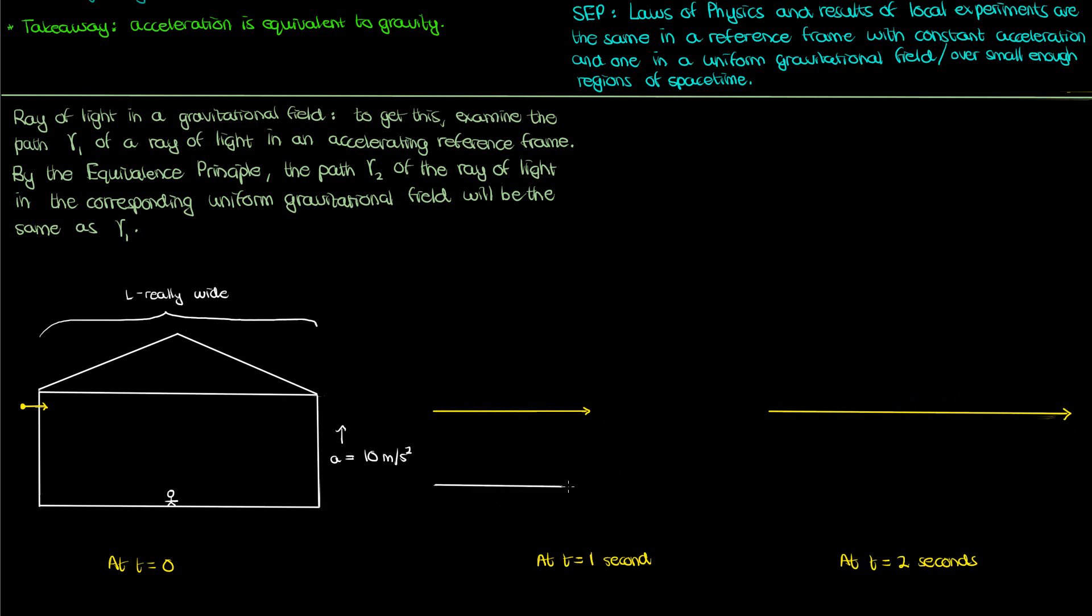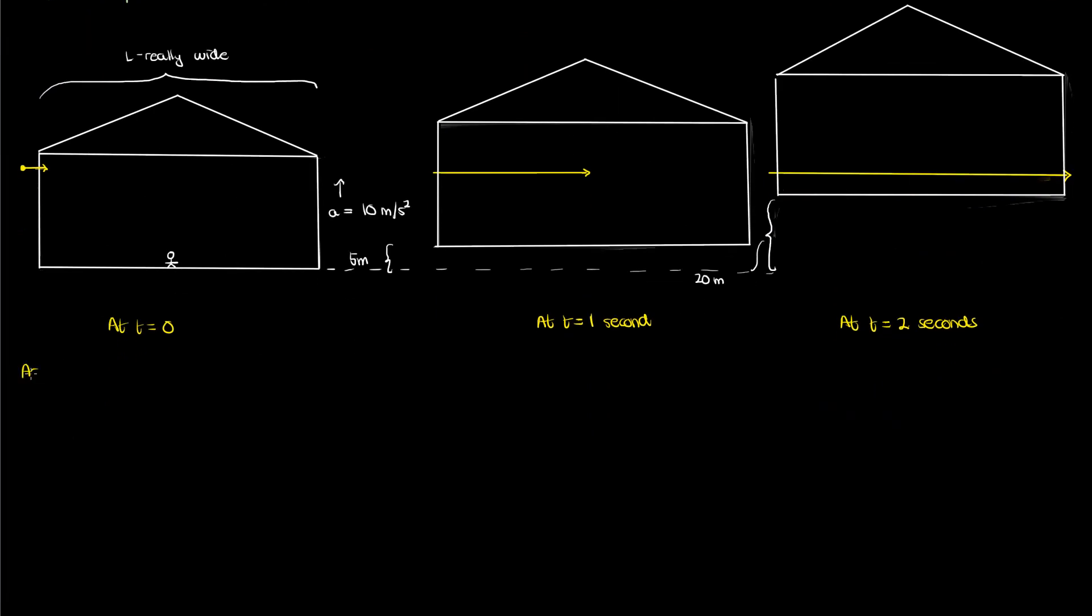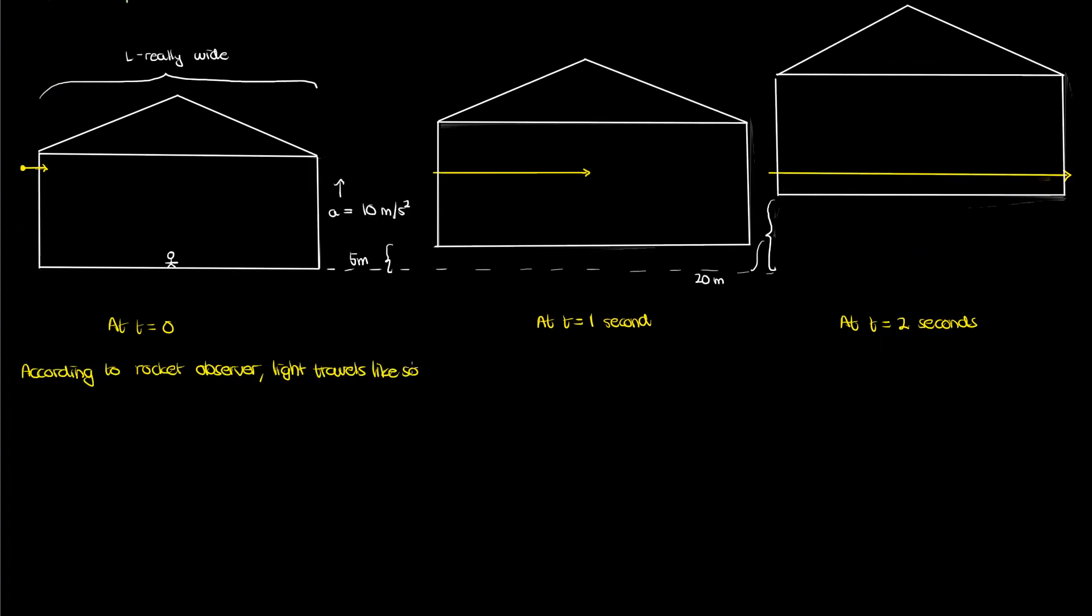But where does the rocket come in? Well at one second the rocket will have gone up by five meters from where it started. To get the five meters I just used half a t squared, that's the equation for displacement in a uniformly accelerated straight line motion. At two seconds the rocket will have gone up by 20 meters again based on half a t squared. So from the perspective of the observer inside the rocket, light starts out on the left end up over here. By one second the ray of light has curved down by five meters and by two seconds when the ray of light is almost at the other end of the ship it has curved down by 20 meters compared to when it started.